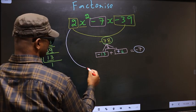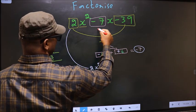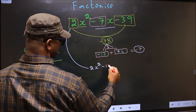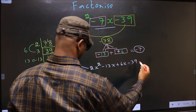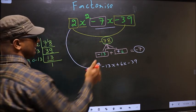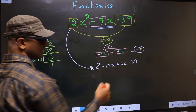Now you change this: 2x². In place of -7x we should write this, that is -13x+6x. So it becomes 2x²-13x+6x-39. Did you understand? In place of -7x I have written this. Next.